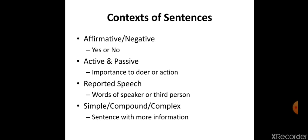The second transformation is active to passive voice, which you would have already studied. In active voice the speaker gives importance to the doer — the subject. In passive voice, the action is given importance. We also do passive to active transformation. Another kind of transformation is reported speech, also called direct to indirect speech. Direct speech uses the exact words of a speaker, while in reported or indirect speech we report the words of the speaker as a third person.